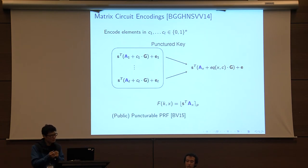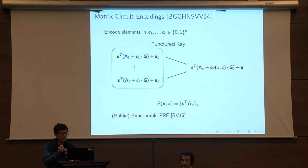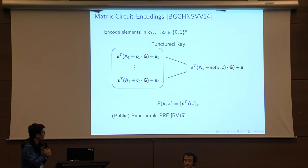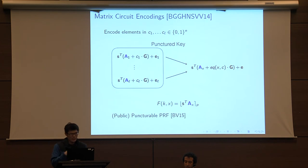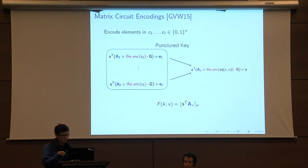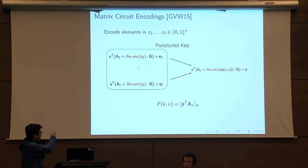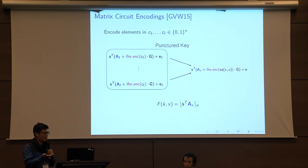To get private puncturing, we borrow ideas from predicate encryption constructions. Before encoding, we first encrypt the puncture point using a fully homomorphic encryption (FHE) scheme, then encode it. We then compute the equality check circuit inside the FHE homomorphic operations. A problem with this approach is that at the end, the result of the equality check is encoded inside the FHE encryption, so there must be a way to extract this information. We resolve this by including in the puncture key the encodings of the FHE decryption key, and using the fact that to multiply two encodings homomorphically, you need only one of the encoded values — not the other. This allows us to compute inner products between the encryption of the equality check circuit result and the FHE secret key, exploiting the fact that FHE decryption is a noisy inner product.